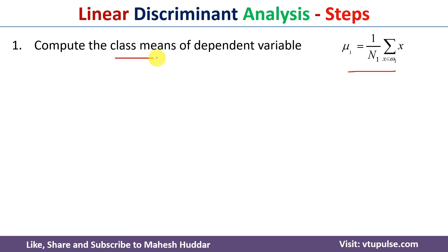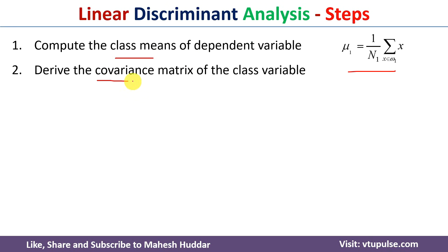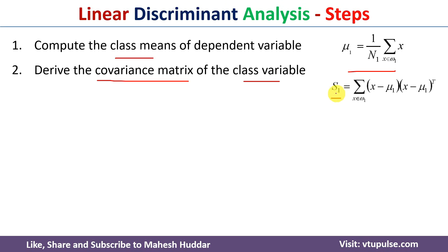Once you compute the class means, the next step is to calculate the covariance matrix for the class variables. The covariance matrix is calculated using this formula: S1 is the covariance matrix for class one, and S1 equals the summation of (x minus mu one) times (x minus mu one) transpose, over all examples in that class. Similarly, we do it for class two, class three, and so on.